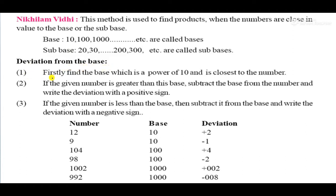Now, what is the deviation from the base? First, find the base which is a power of 10 and is closest to the number. Second, if the given number is greater than this base, subtract the base from the number and write the deviation with a positive sign. Third, if the given number is less than the base, subtract it from the base and write the deviation with a negative sign. For example: 12 — base is 10, so 12 minus 10 equals plus 2. For 9 — base is 10, and 9 is less, so 10 minus 9 equals minus 1.